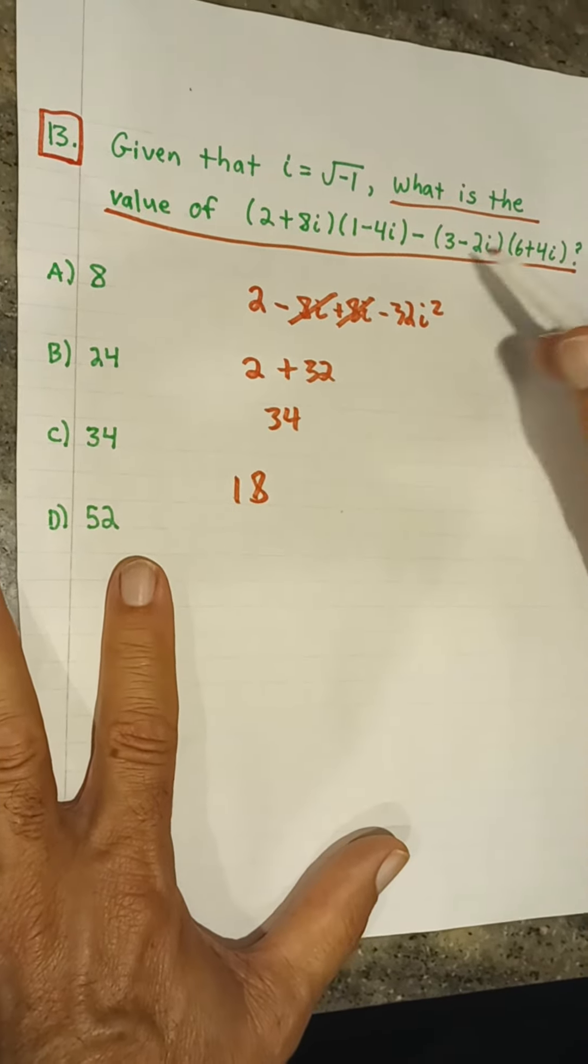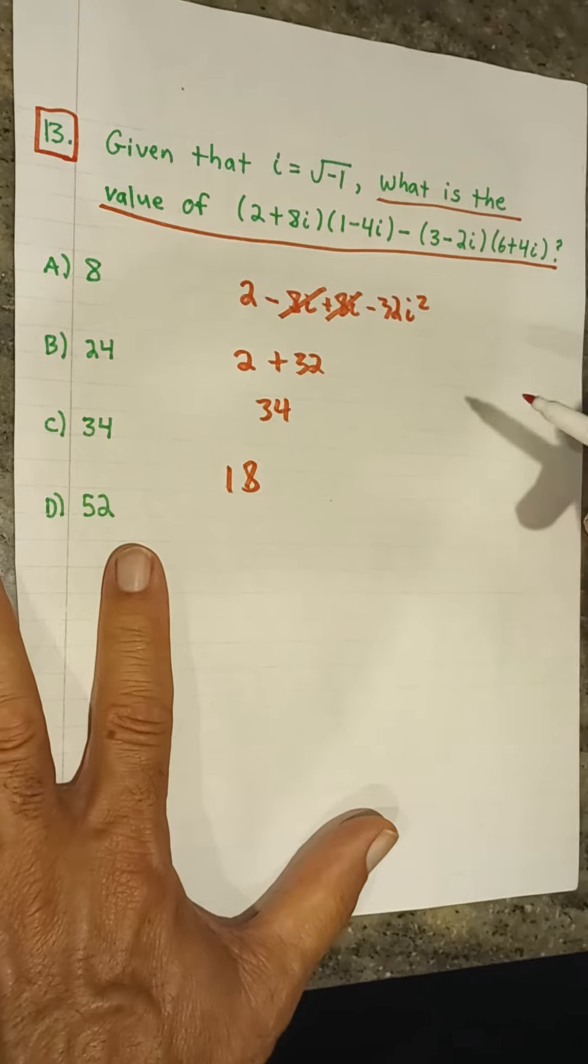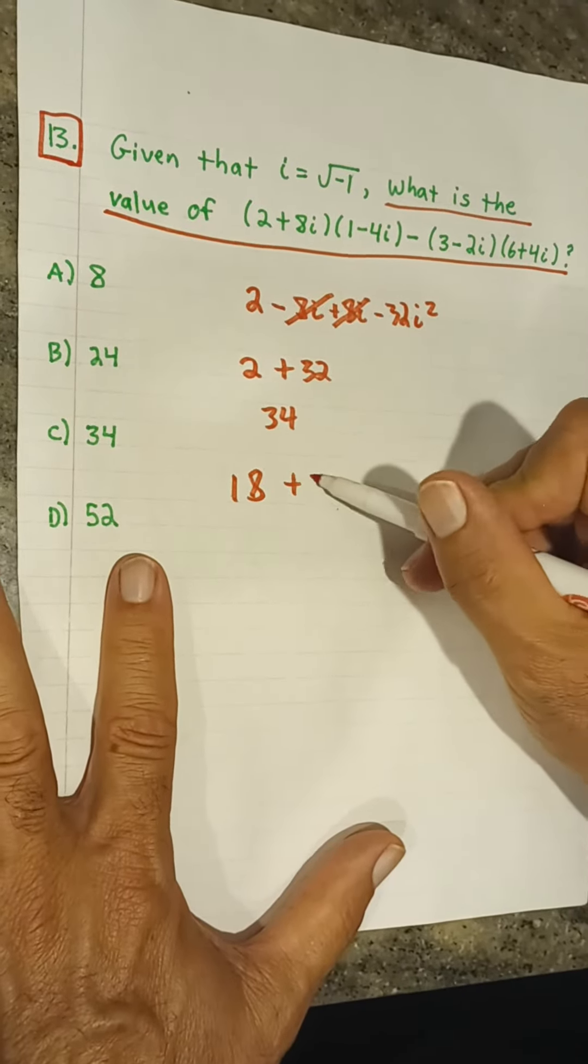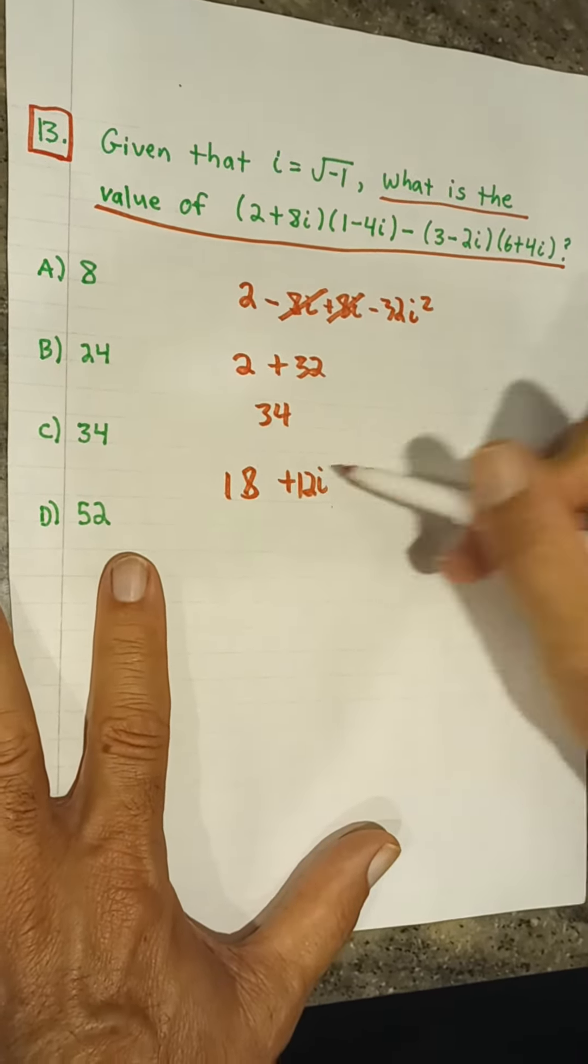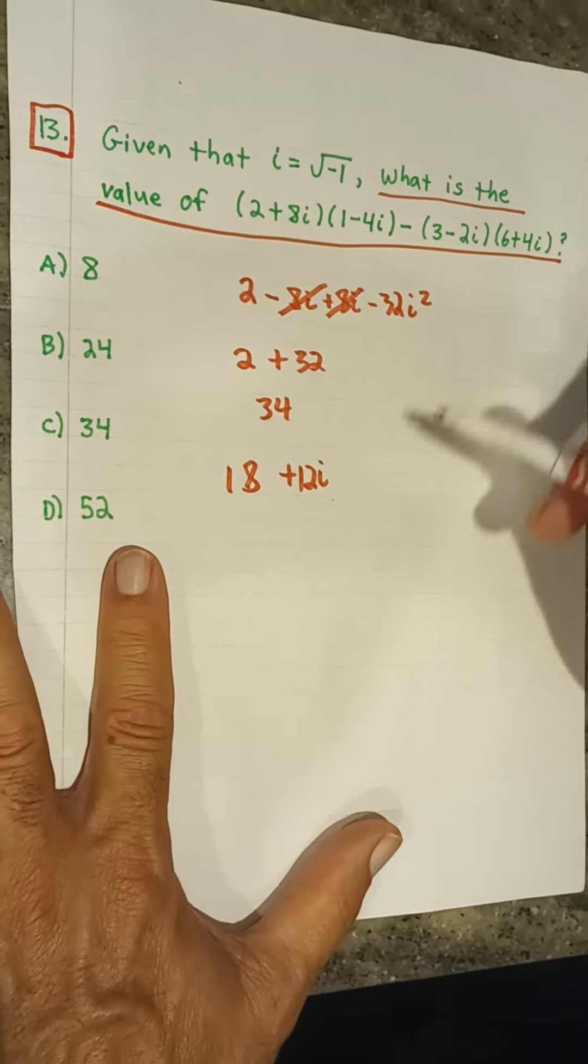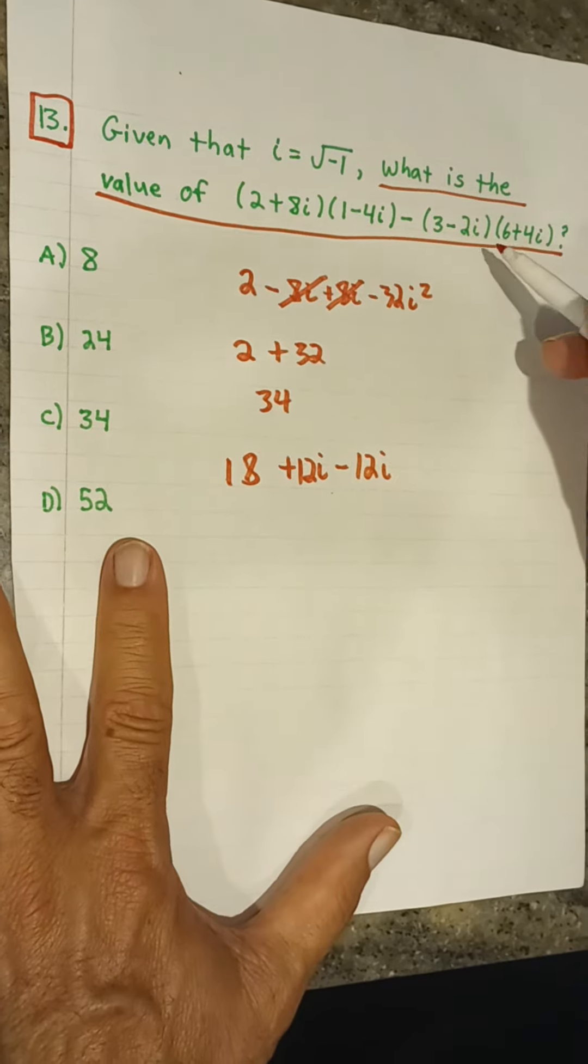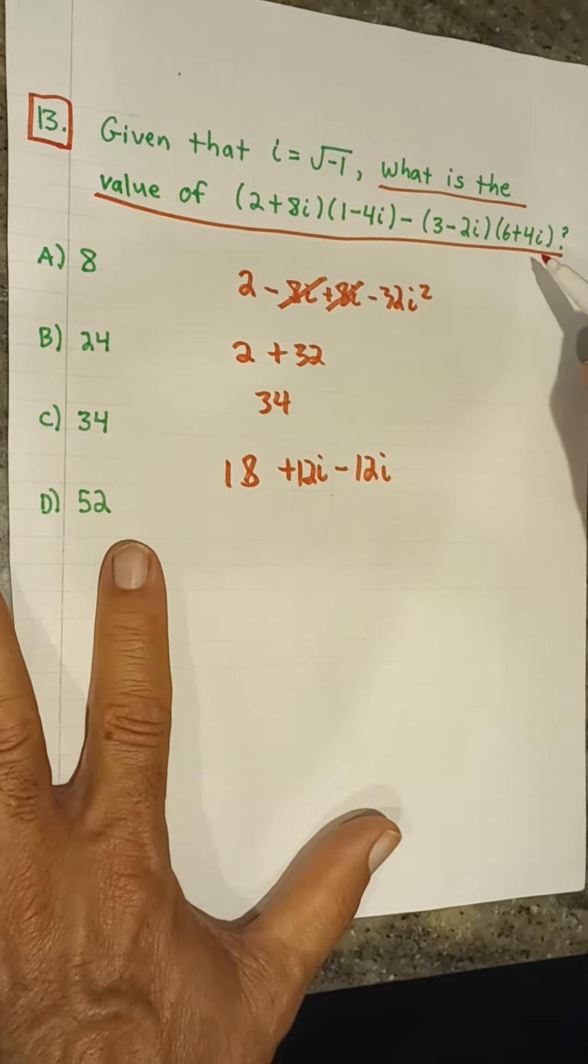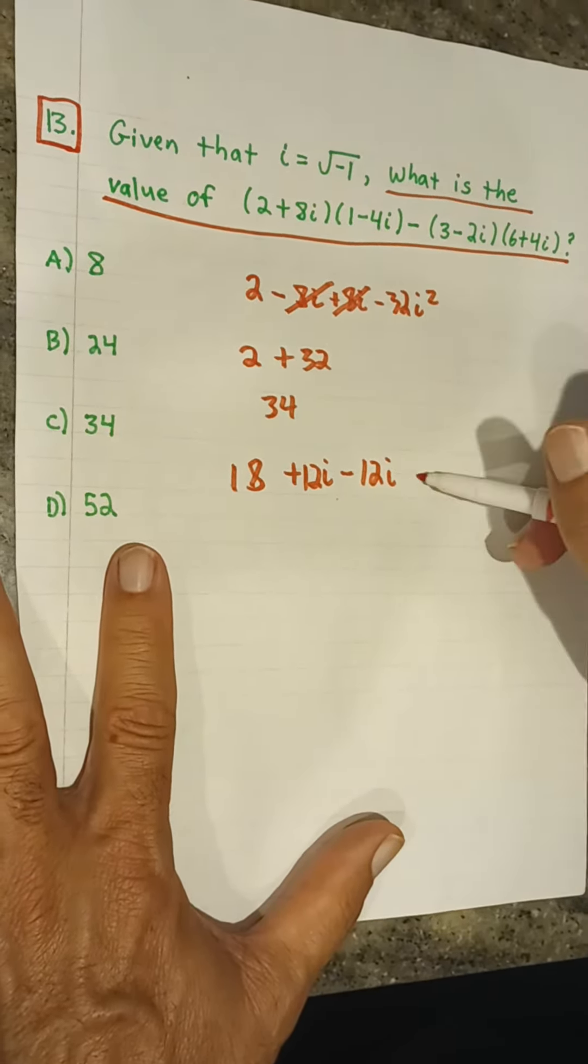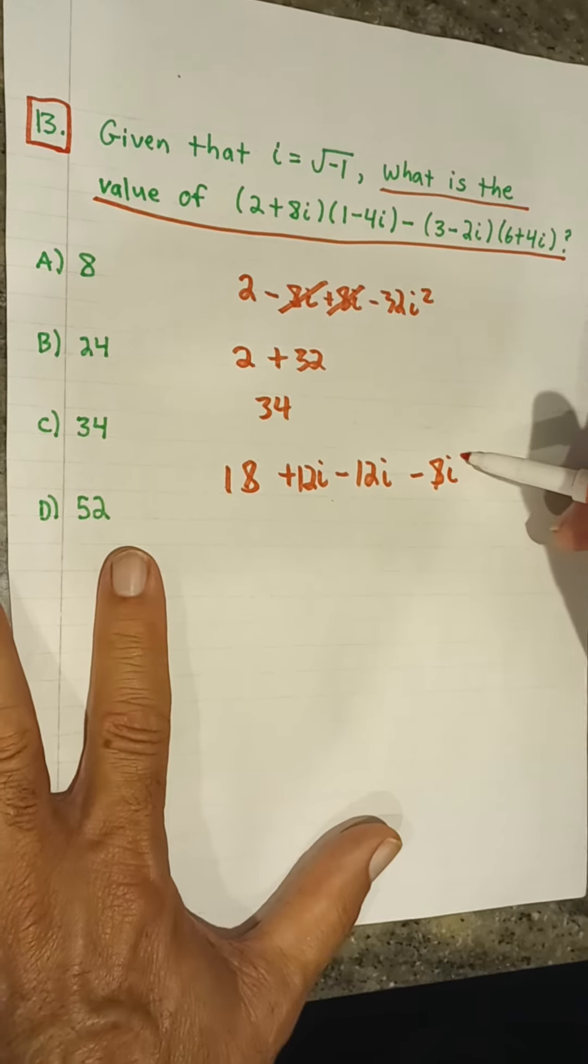Outside, 3 times 4i is 12i. Inside negative 2i times 6 is negative 12i. And then last, negative 2i times 4i is negative 8i squared.